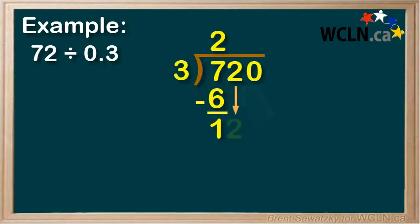So we bring down the 2, and now we have 12. Can 3 go into 12? Yeah, 3 times 4 is 12. So we'll put the 4 up here, and 3 times 4 equals 12. The 12 is down here, and again we subtract. 12 minus 12 equals 0.